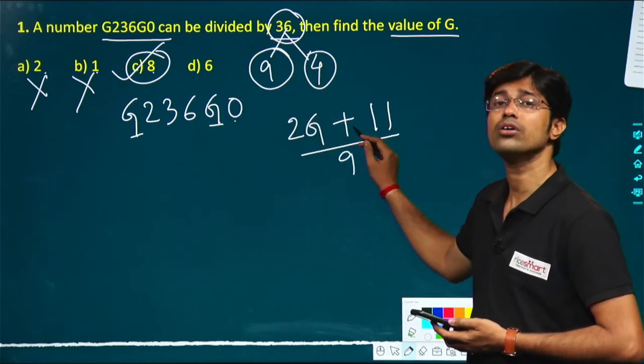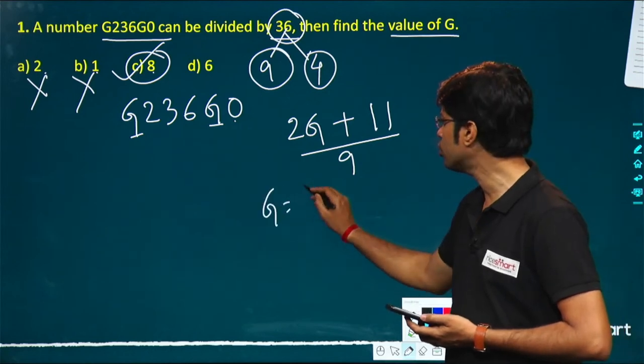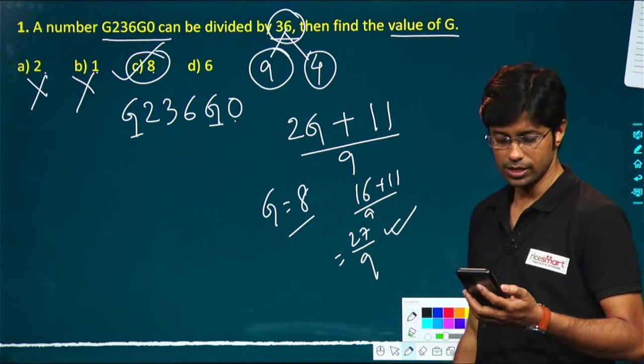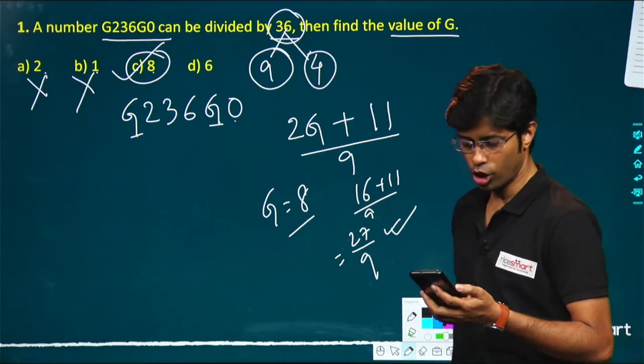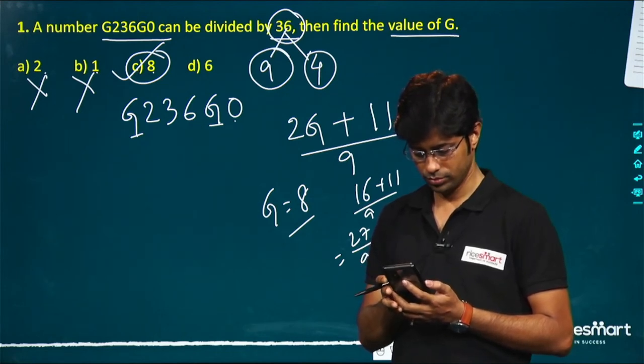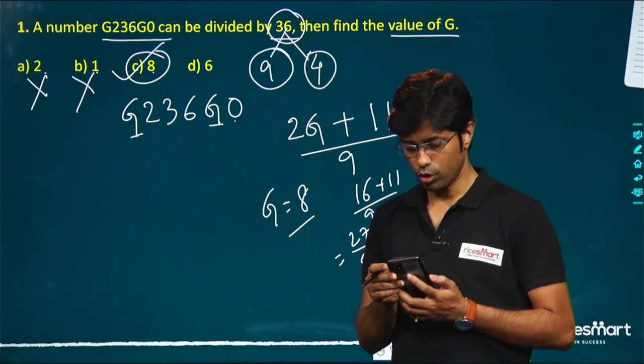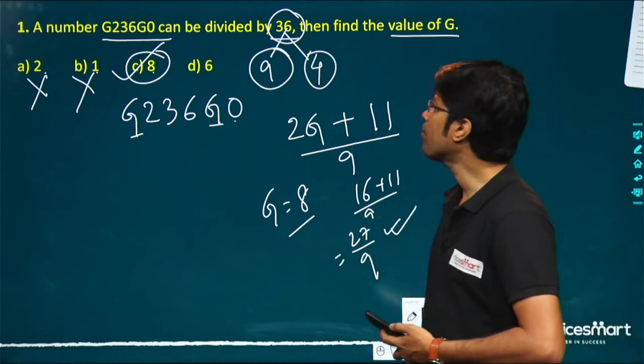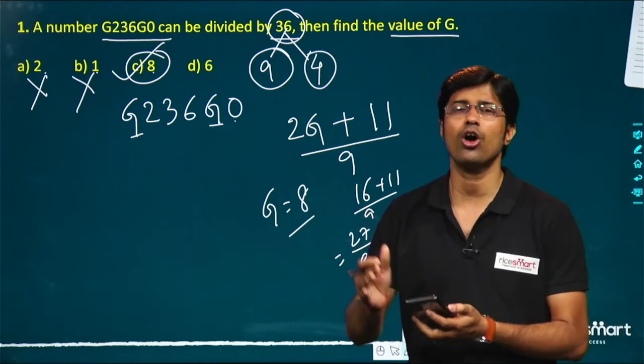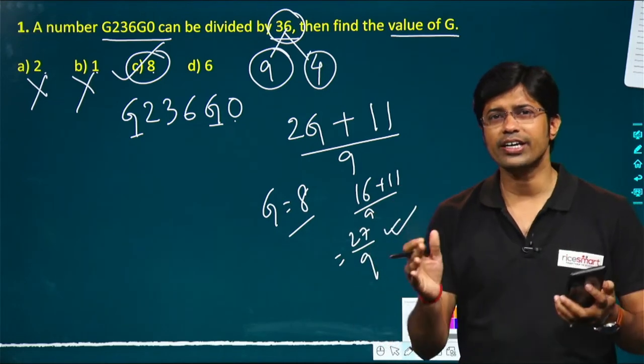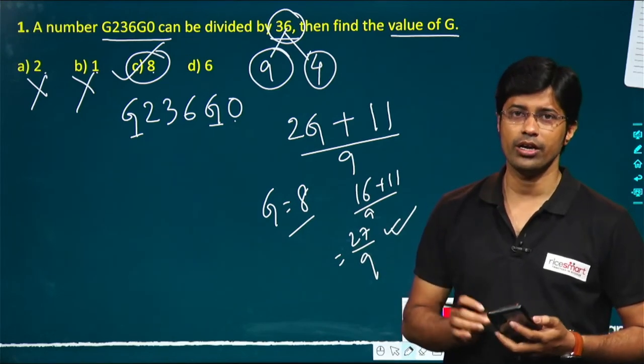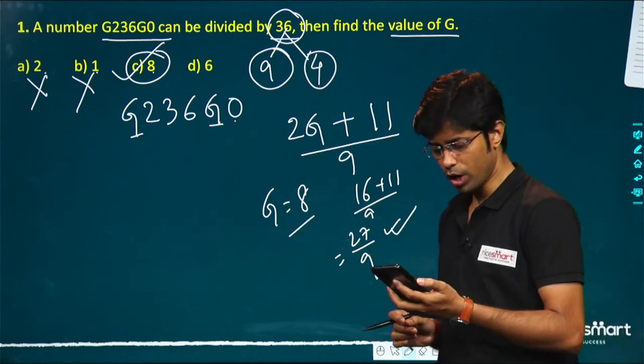For divisibility by 9, the sum of all digits must be divisible by 9. We have 6 + 2 + 3 + G + G + 0. That's 11 + 2G. Checking options: if G = 8, then 11 + 16 = 27, which is divisible by 9. So option C, G = 8, is the answer. This is a very important divisibility concept.